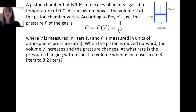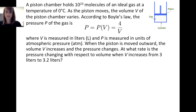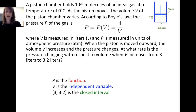When the piston is moved outward, the volume increases and the pressure changes. At what rate is the pressure changing with respect to volume when the volume increases from 3 liters to 3.2 liters? We have p as a function, v as the independent variable, and the closed interval from 3 to 3.2.